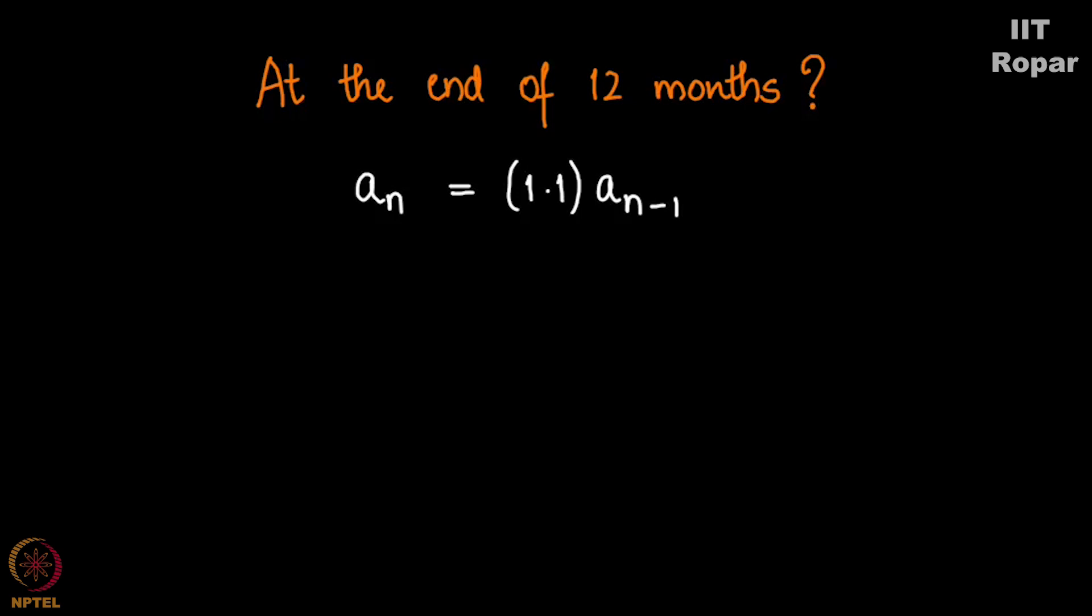So AN equals 1.1 times AN-1 is the recurrence relation and the question is at the end of twelve months which is A12, what will be your returns? Given that A0 is 1000, please note that is very important, that's called the initial condition.